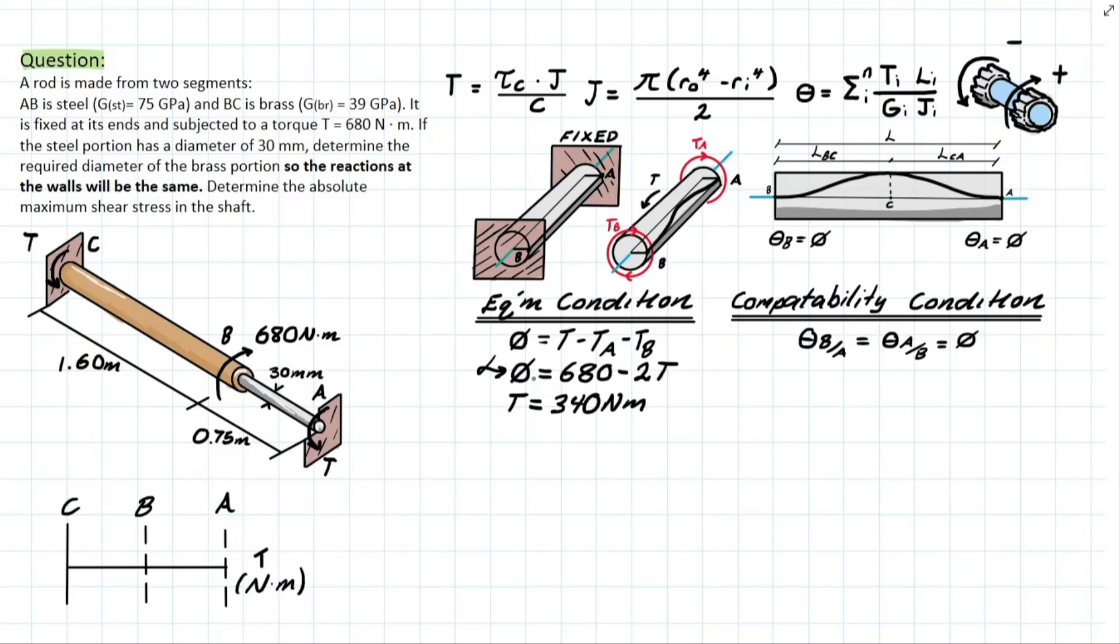Now what I'm going to do is simply add this information to our torque diagram, and if we work from left to right and remember our conventions, we're going to have a negative 340 on the bottom here with a jump of 680 back to a positive 340 with a final jump back to zero at the last reaction.